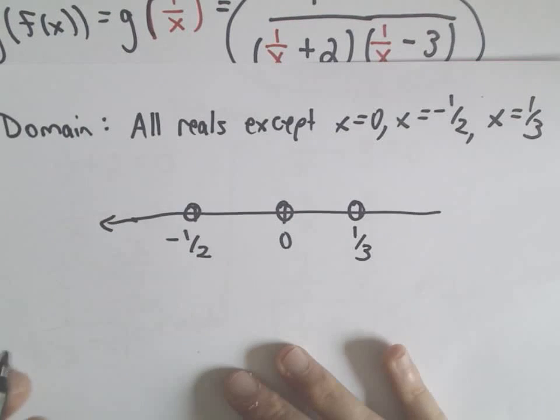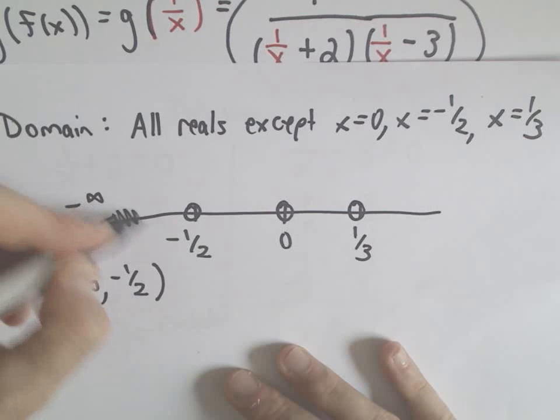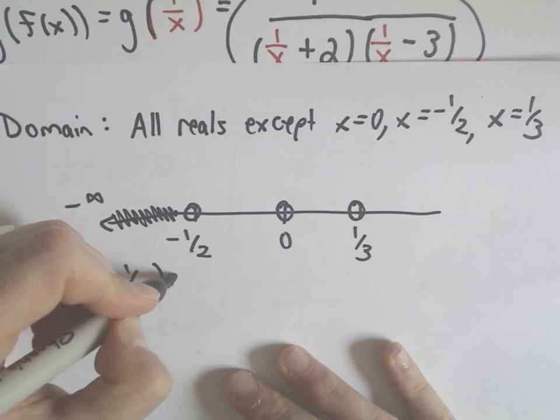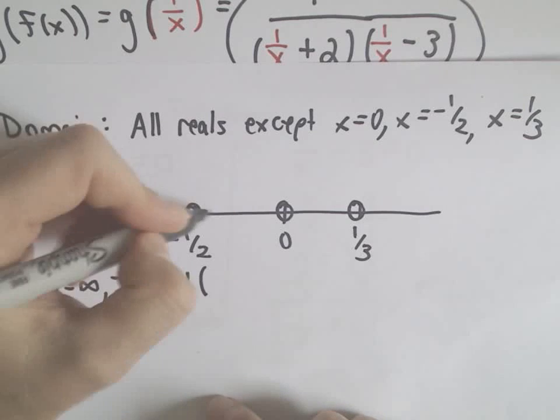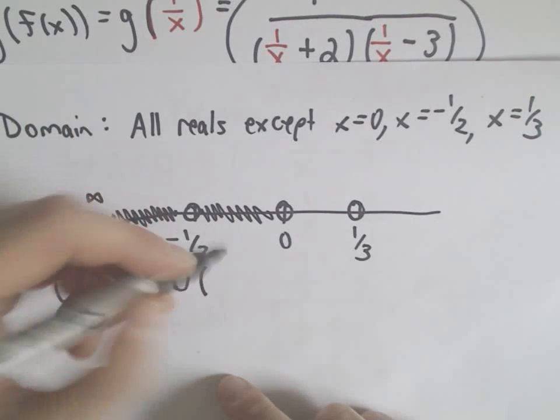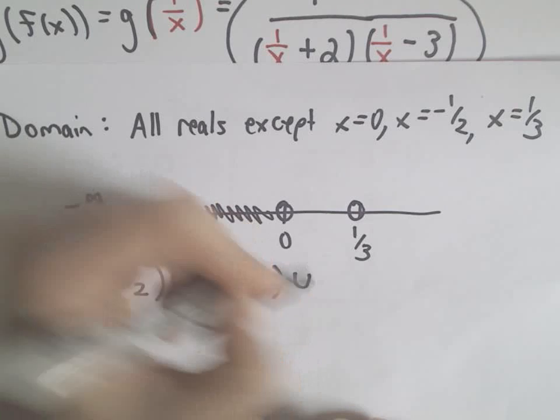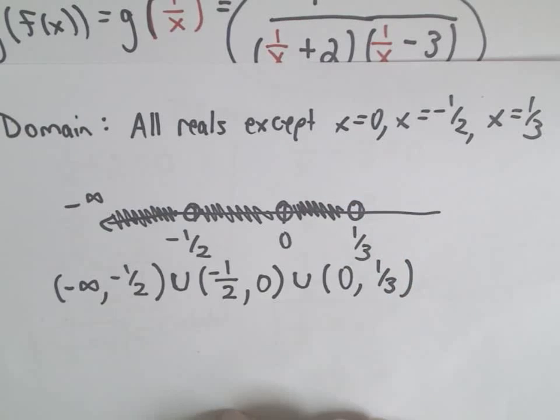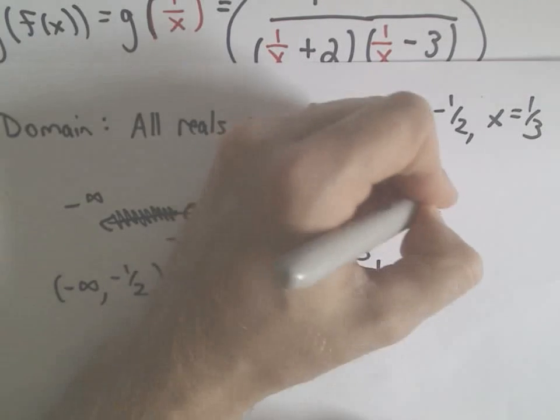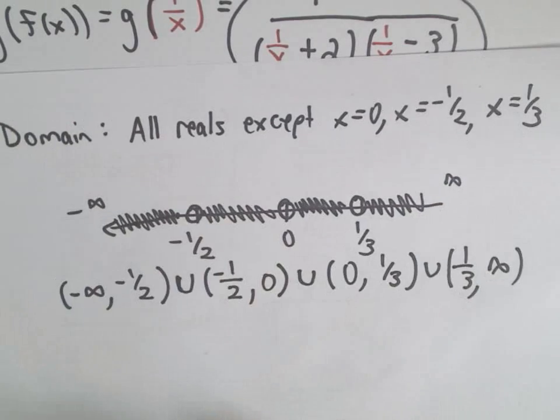If you want to write this in interval notation, so 0 is out, negative 1 half, that's also out, positive 1 third, that's also out. And now I'm just going to describe every interval using interval notation. So we can go from negative infinity up to negative 1 half, but not including it, so I'll use parentheses. The union sign, which you can also think about, stands for the word OR. Then to describe the next interval of numbers, I'll have to go from negative 1 half up to 0, but again, not including it, so I'll use parentheses. Or, I'll describe the next little interval of numbers, that's from 0 up to 1 third, again, not including 1 third. Or, and then we'll go from 1 third out to positive infinity. So there's our domain.